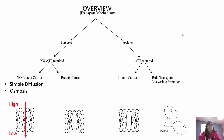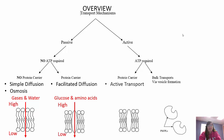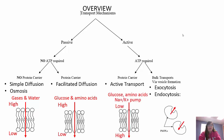We have passive and active transport. Passive transport does not require ATP; active transport requires ATP. When you're active, you need more energy - ATP is the energy for the cell. Within passive transport, we either have no protein carrier necessary or a protein carrier necessary. If we don't need a protein carrier, that's simple diffusion - whatever it is just passes right through the lipid bilayer. Gases and water do this; carbon dioxide and oxygen can pass right through.